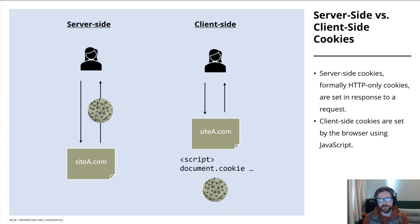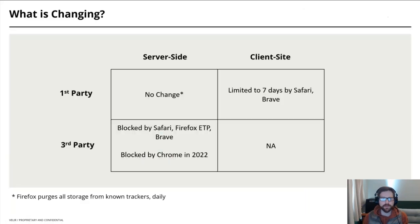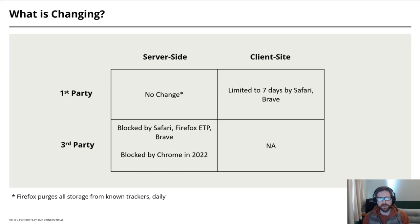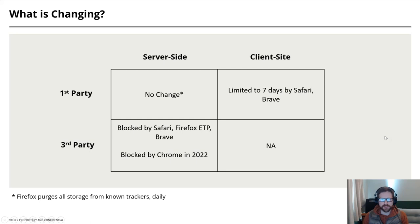So how do different marketing technologies use these different cookie architectures, and why does it matter? Looking at this grid, we can summarize what is changing — distill the cookiestatus.com grid down to what people really care about. In the top left, there's not much changing for server-side first-party cookies — this is considered the most secure type of cookie. It's set by the server, only within the context of the website you're visiting. This is how login is handled typically.